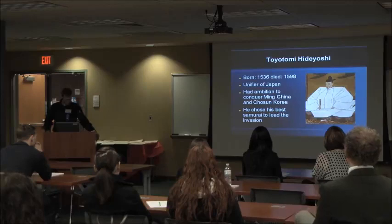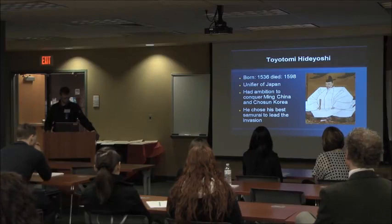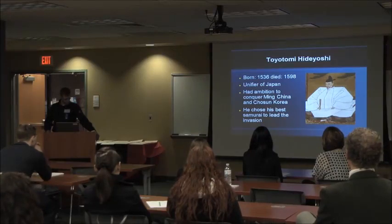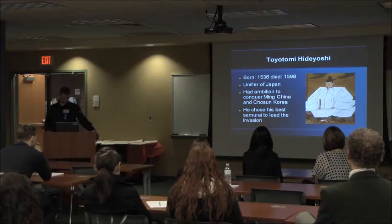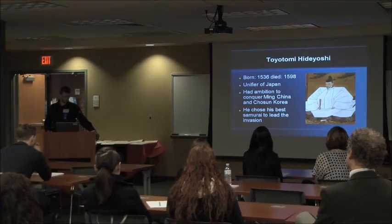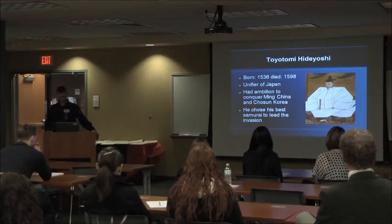The Toyotomi was the daimyo ruling Japan before the war. Prior to the war, he used force to unify Japan and had an ambition to conquer Joseon Korea and China. He prepared to invade by choosing his best samurai to lead the invasion.